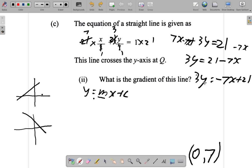Then, divide. If we divide both sides by 3, 3 will cancel itself. So, I have y equals, over 3, negative 7 over 3, x plus 21 over 3, 7.